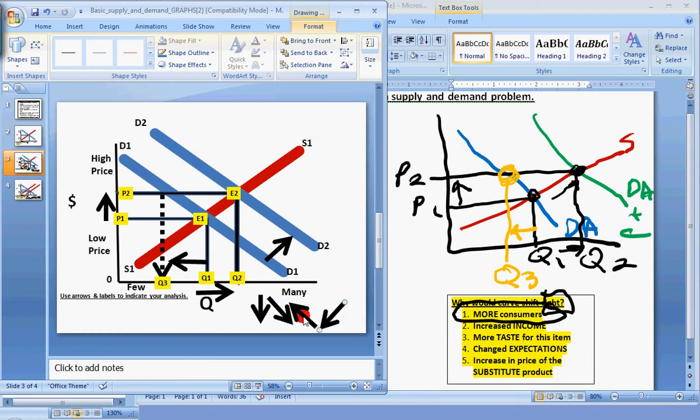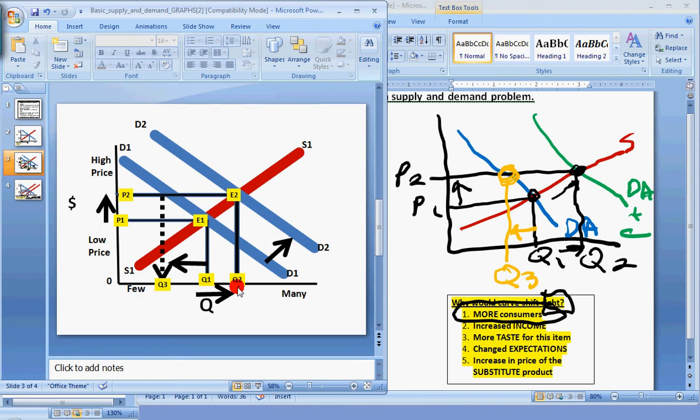Now we can get rid of the extra eye symbols by just highlighting them and then clicking on cut under the home. And we get rid of those.